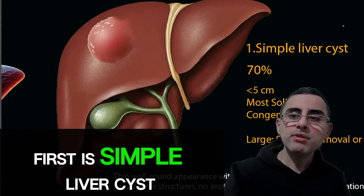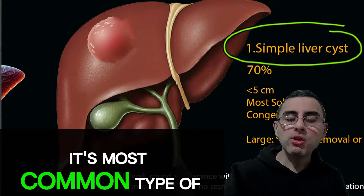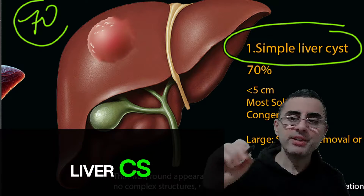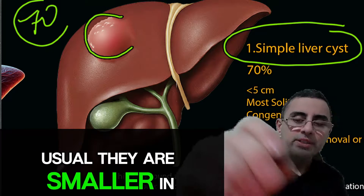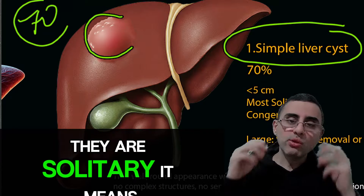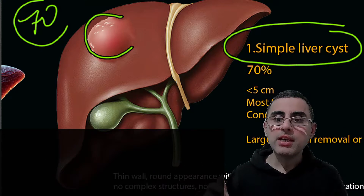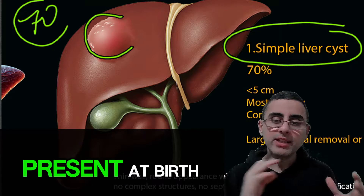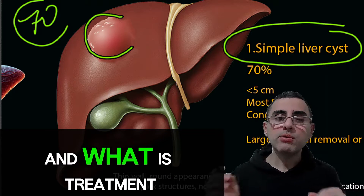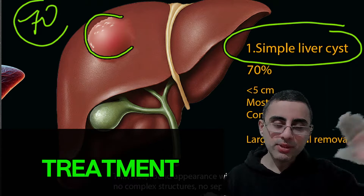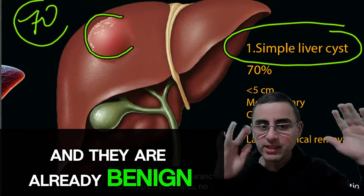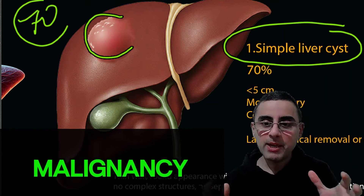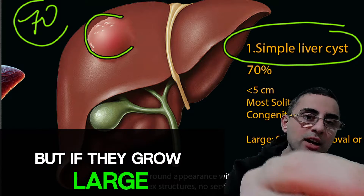The first cause is simple liver cysts. It's the most common type, accounting for around 70 percent of liver cysts. Usually they are smaller in size, solitary — meaning not multiple — and congenital, meaning they are present at birth. Treatment is usually not required as they are very benign in nature; they do not cause any symptoms and have no risk of malignancy.